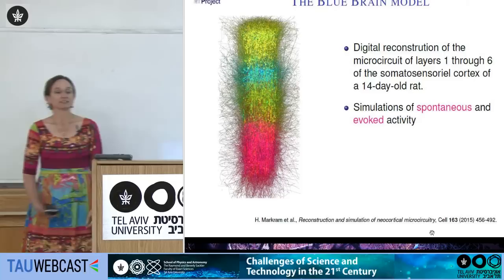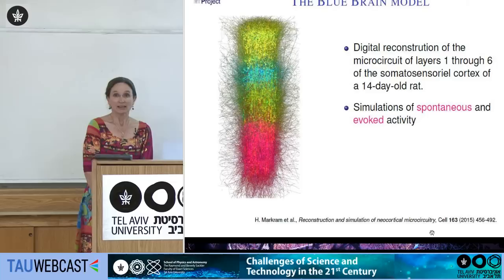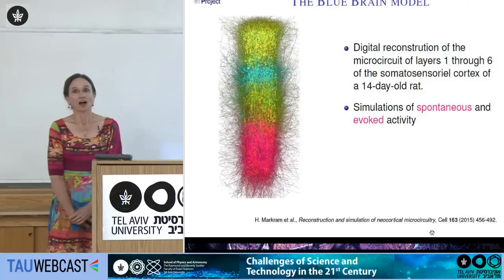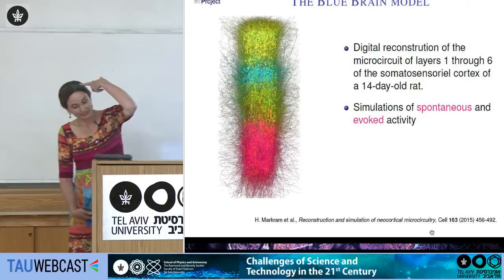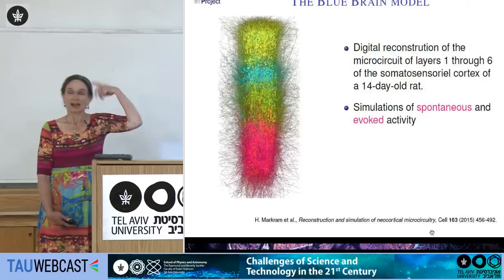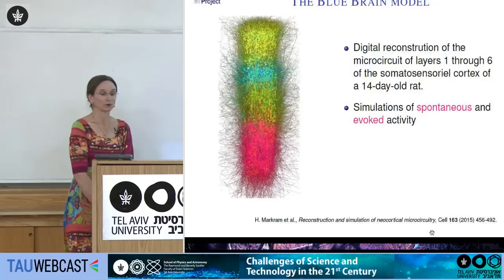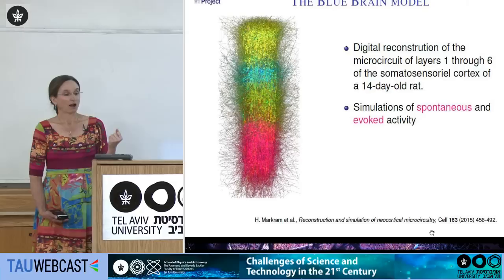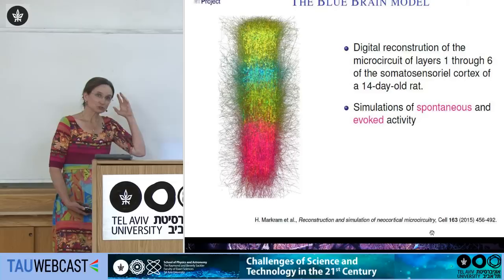What the Blue Brain team has done is make a digital reconstruction of part of the cortex — the somatosensory cortex of a very young, 14-day-old rat. This part of the cortex is involved with primary analysis of sensory information coming in from the thalamus, deciding where to send the signals to the motor cortex, farther into the sensory cortex, and so on. The goal was to reconstruct this microcircuit on computer — capturing not just its structure but also its function.